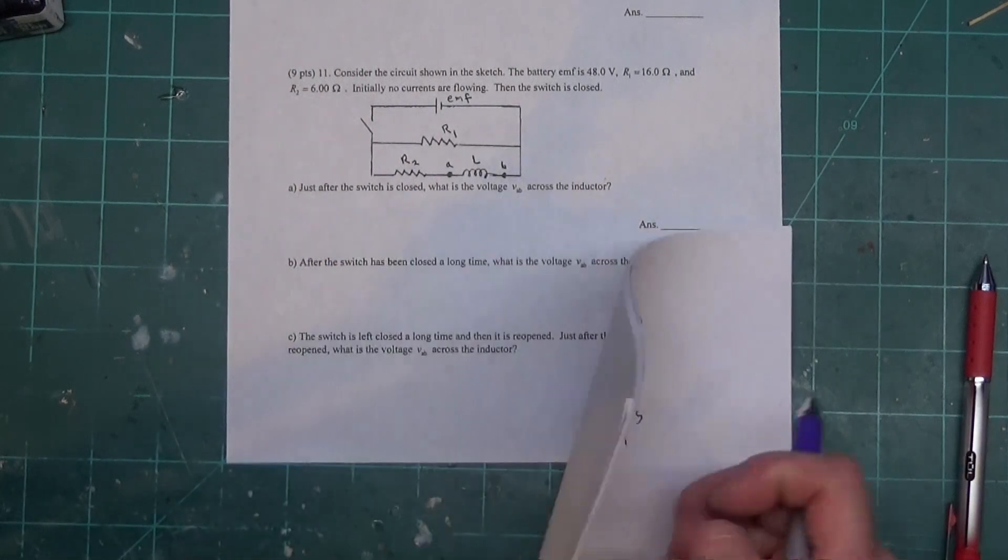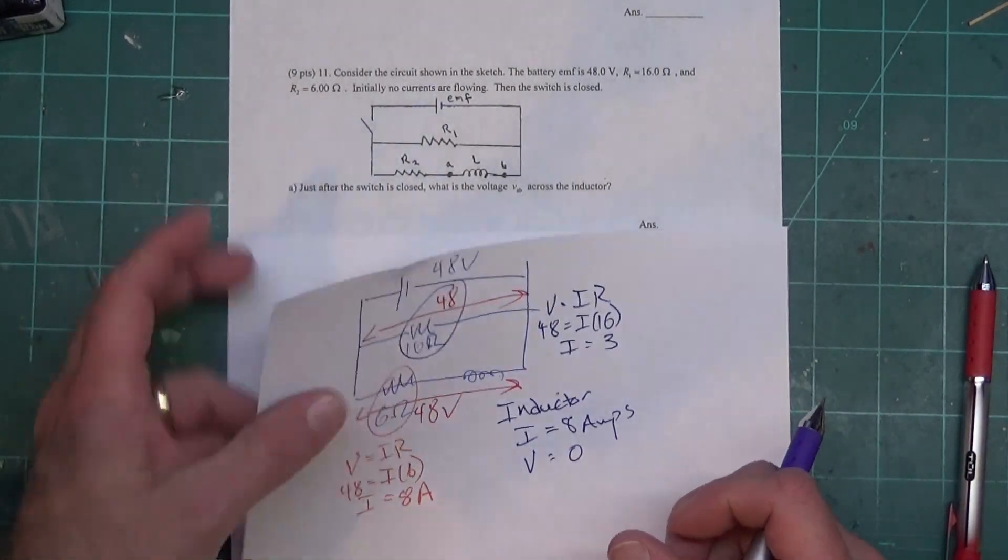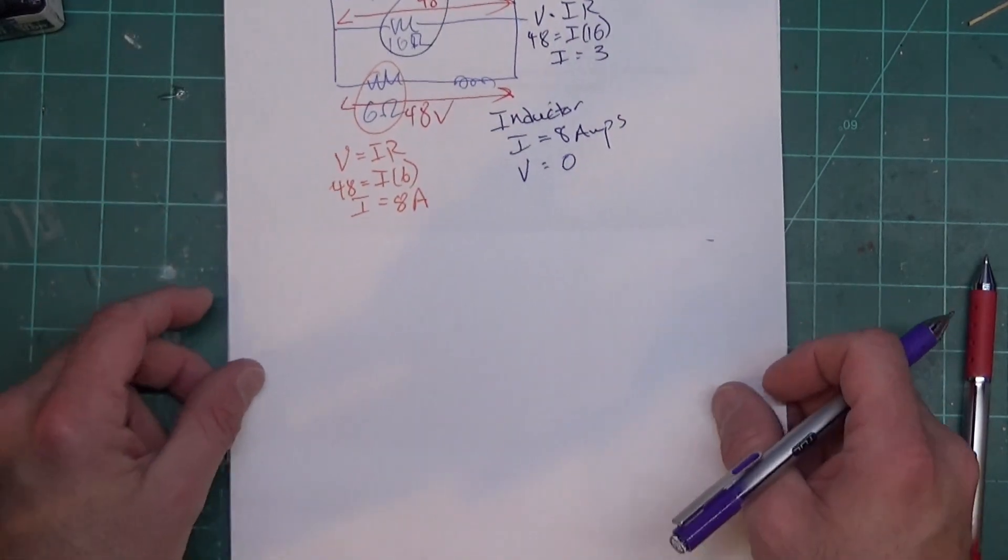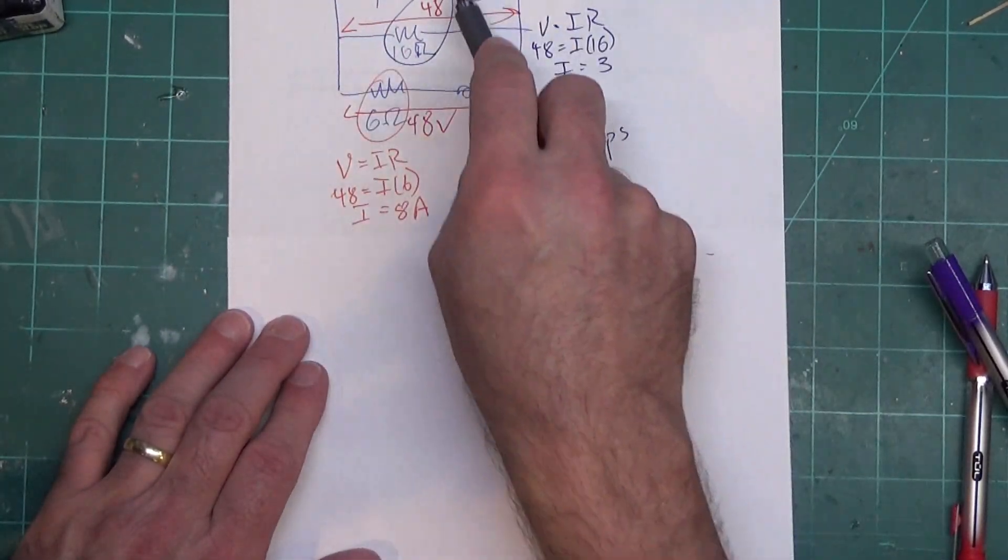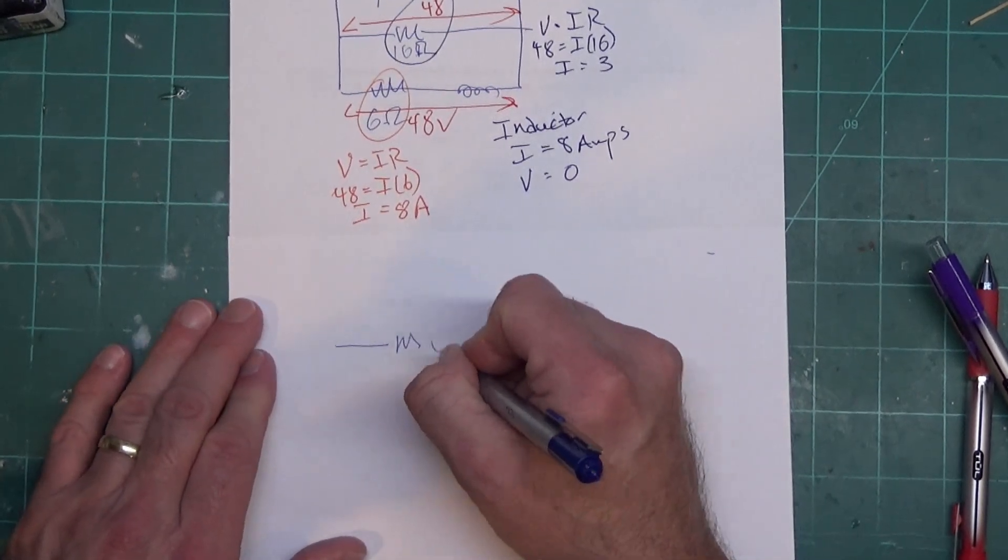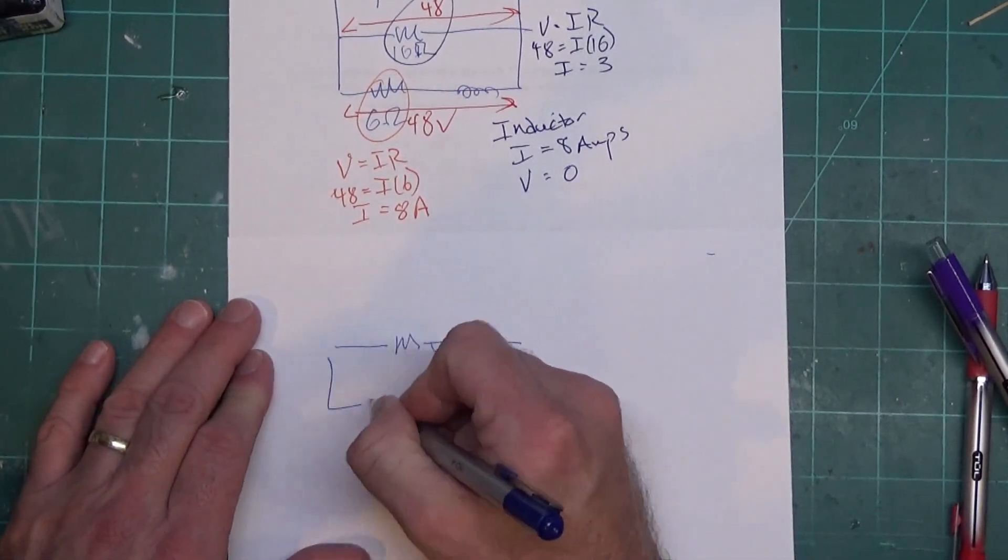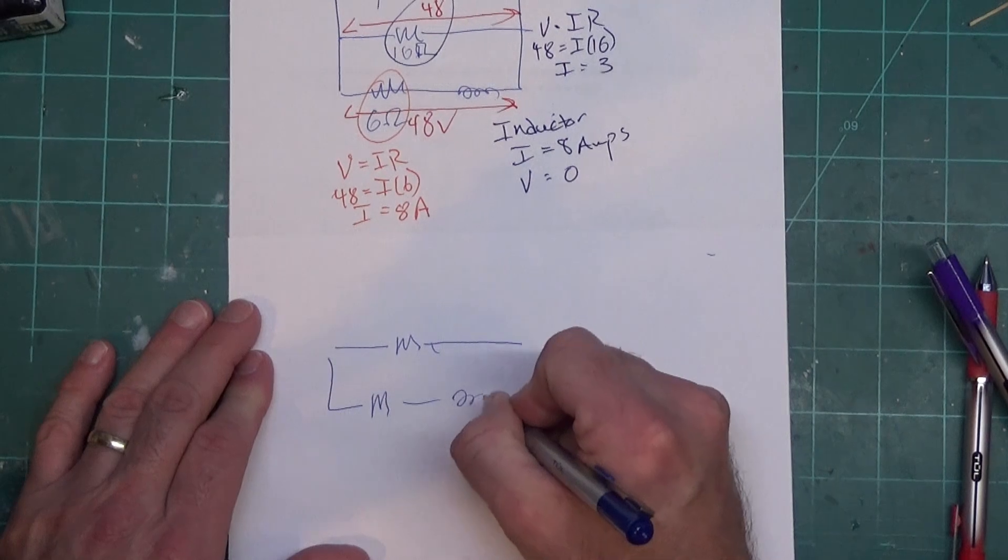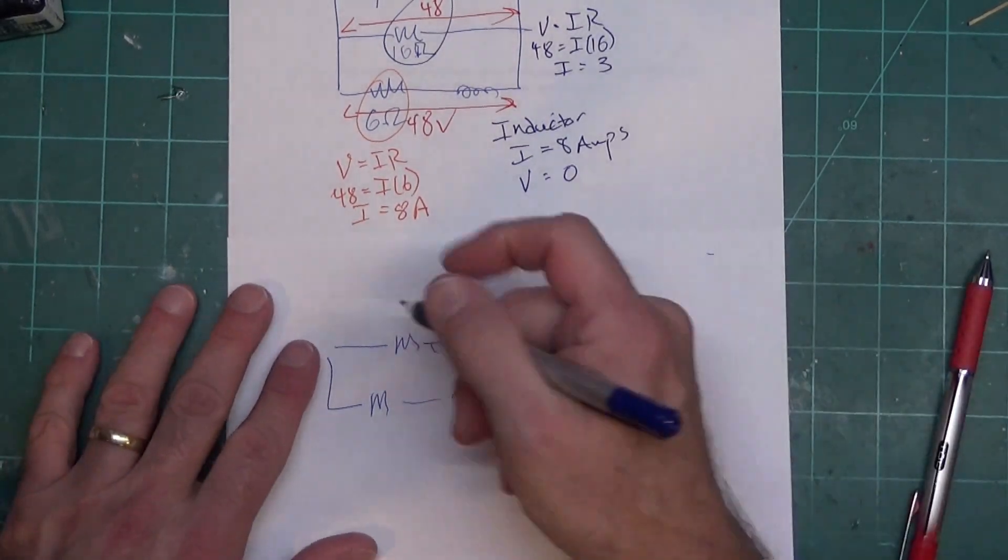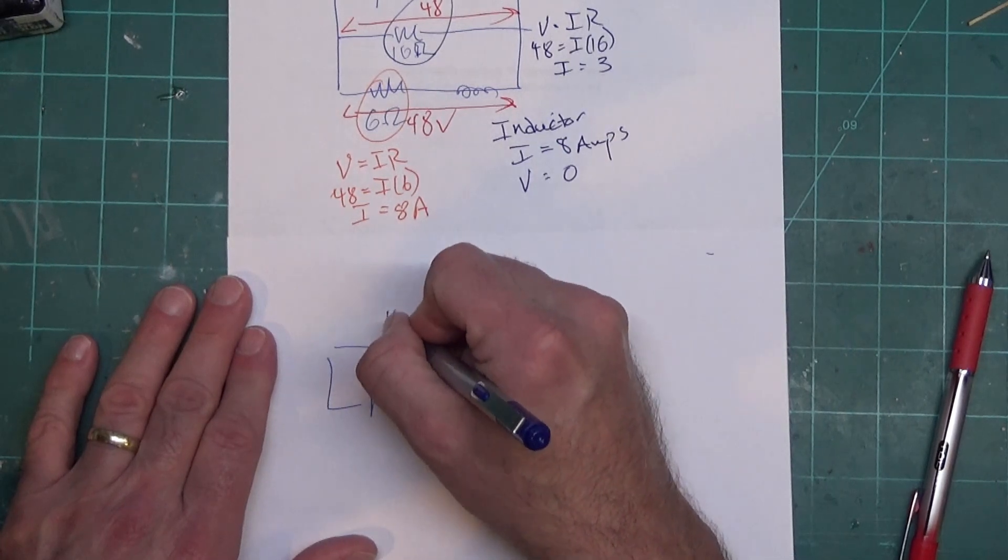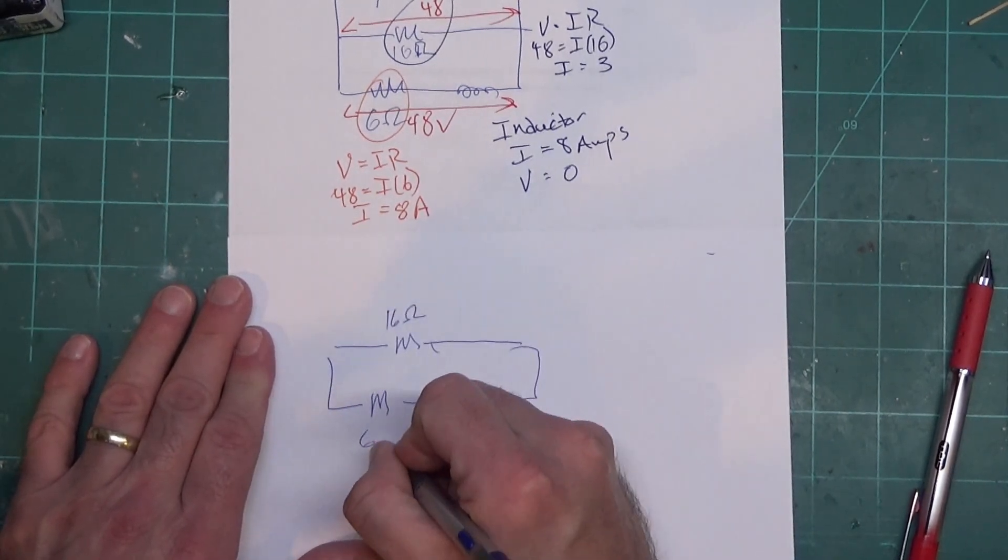All right, now what happens when the switch is reopened? Well when I reopen the switch, what happens is that my circuit, the battery drops off, and we end up with a circuit like this. We still have our 16 ohms up here, we still have our 6 ohms down here.